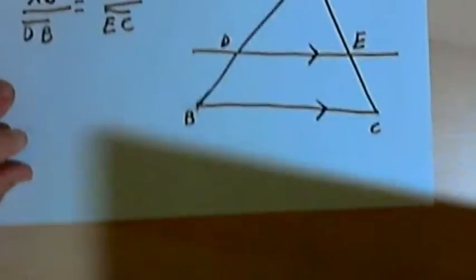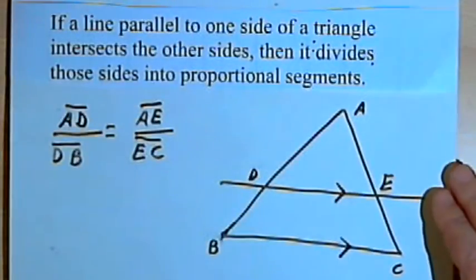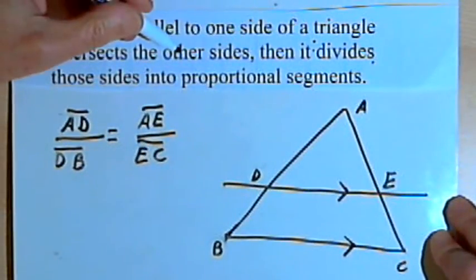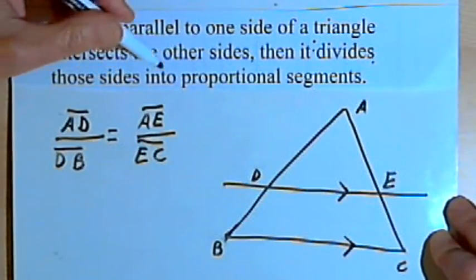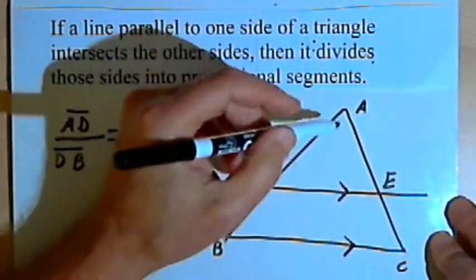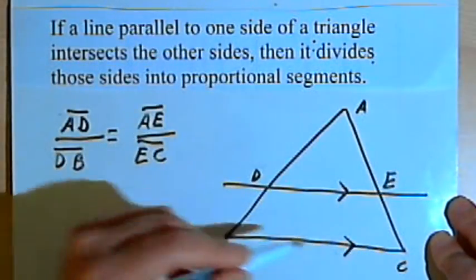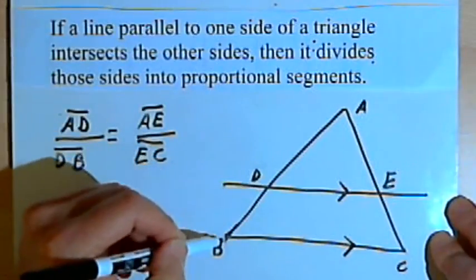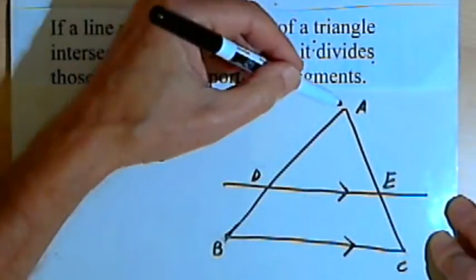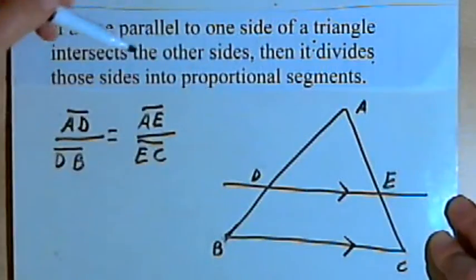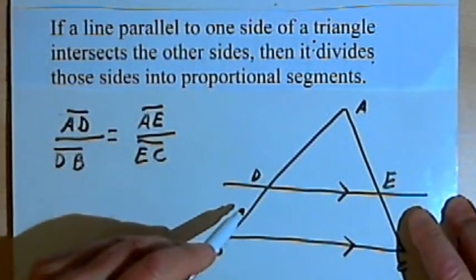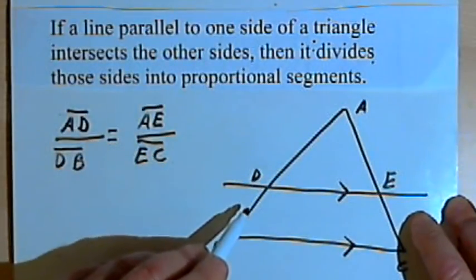The side-splitter theorem says that if a line parallel to one side of a triangle intersects the other sides, then it divides those sides into proportional segments. So here's what this means. If I've got a triangle, like triangle ABC, and I draw a line parallel to side BC — we'll call that line DE — so that it intersects the other two sides, then this theorem says that it's going to divide those sides into proportional segments.